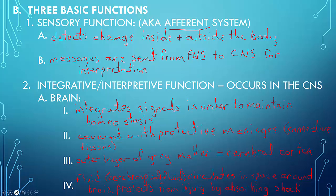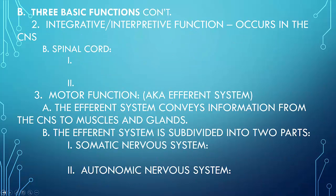The second part, or the second basic function of the nervous system is, again, continuing with the interpretive function, which is also in the CNS, deals with the spinal cord. And the spinal cord, of course, as we know, is located inside the vertebral column, and there are connections between sensory and motor neurons that occur within the spinal cord.